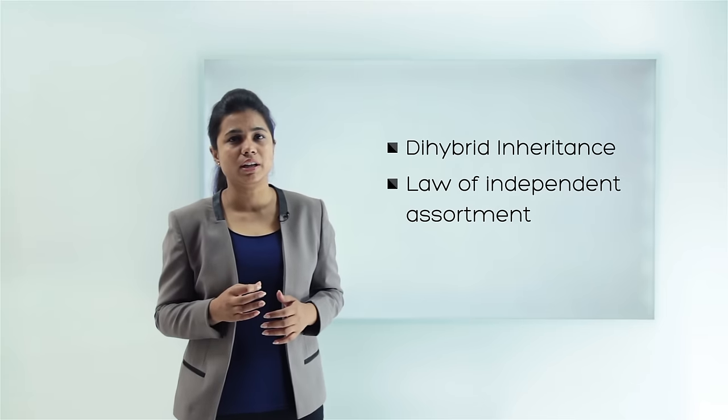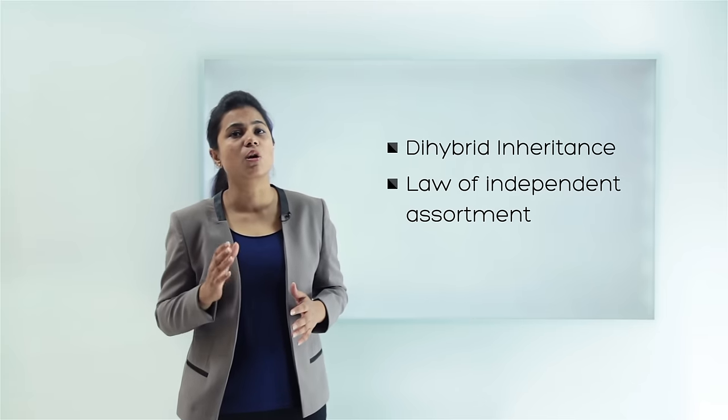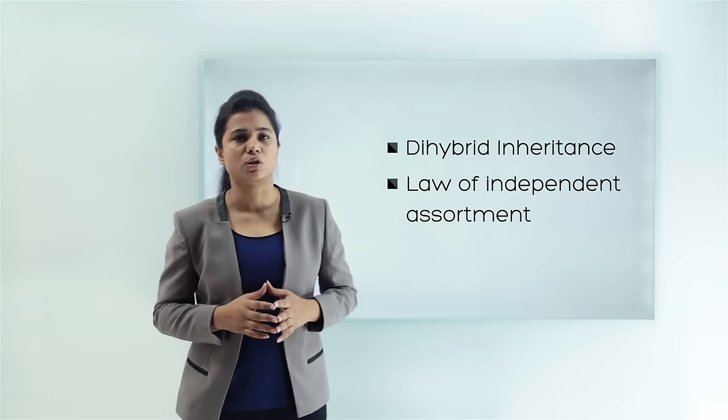Hello everyone. In the last video, we had learned the monohybrid cross of the pea plant and also the law of segregation, which said that out of the two genes, only one gene can be present in the gamete. In this video, we are going to see the dihybrid inheritance and the law of independent assortment.